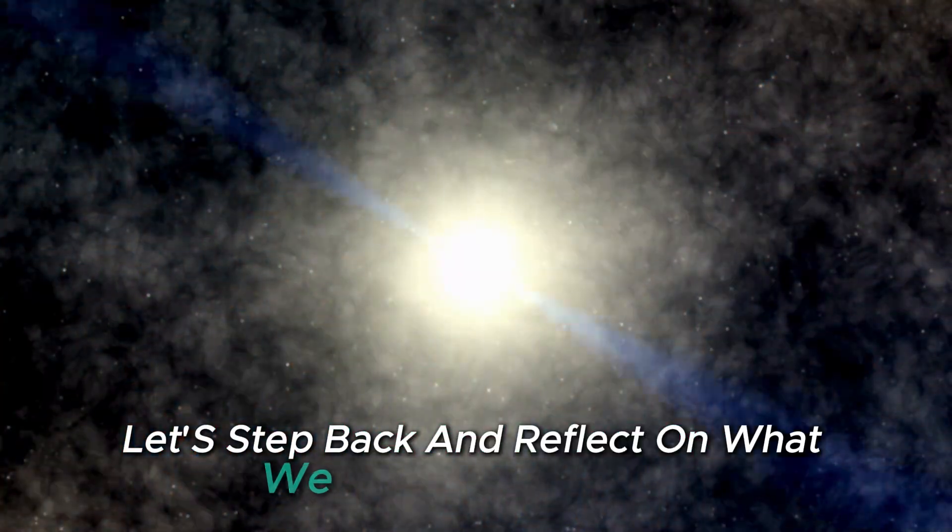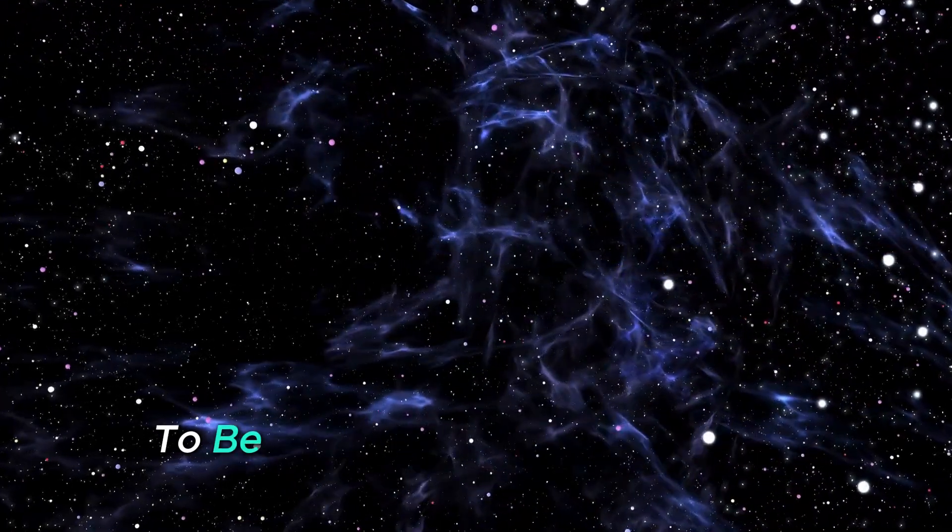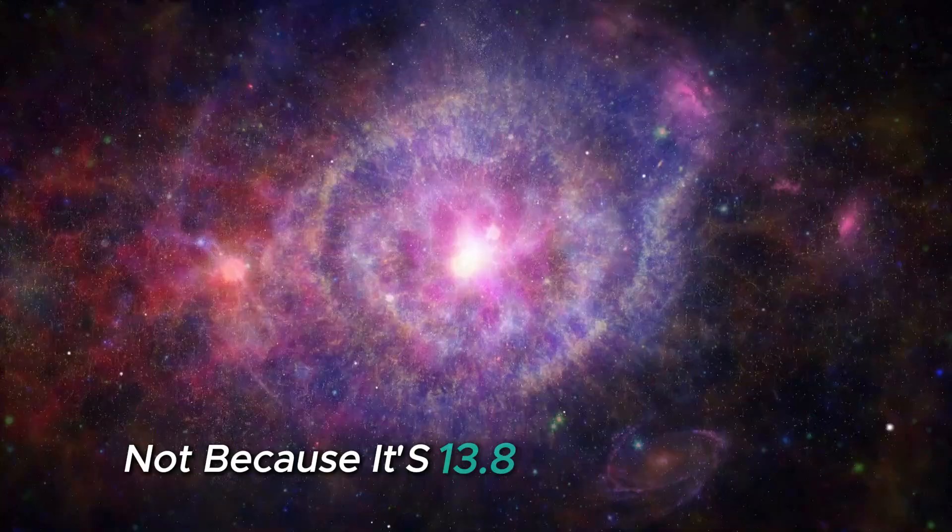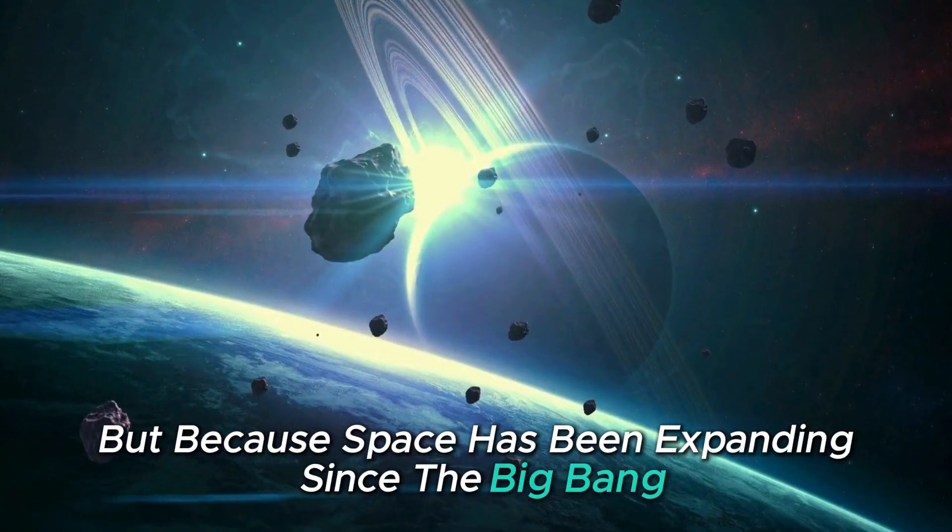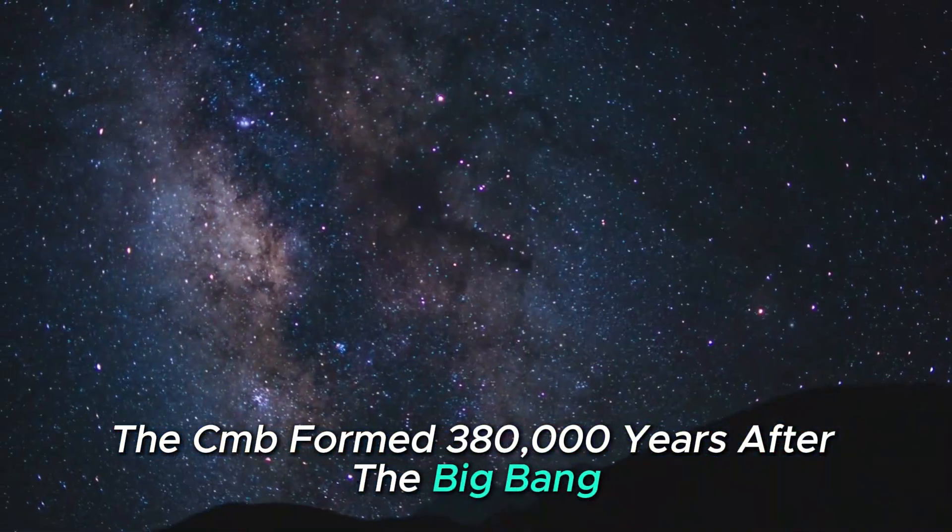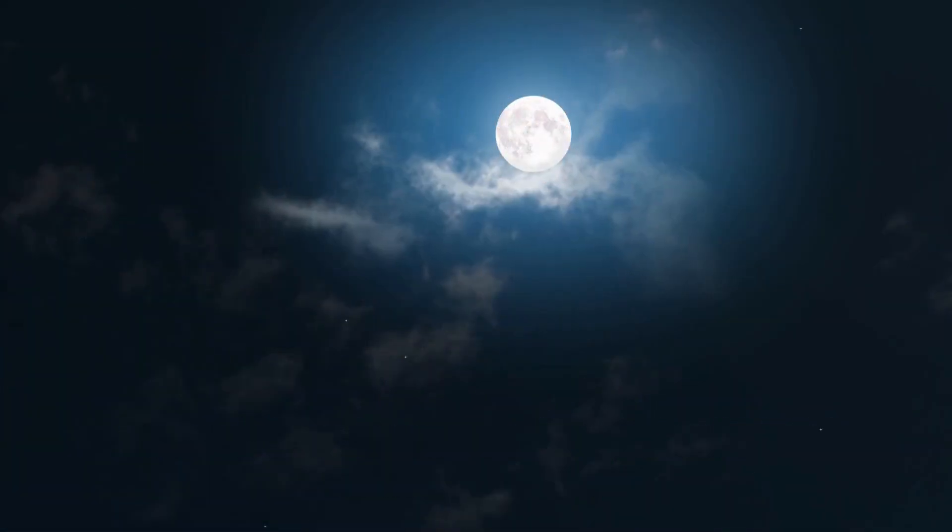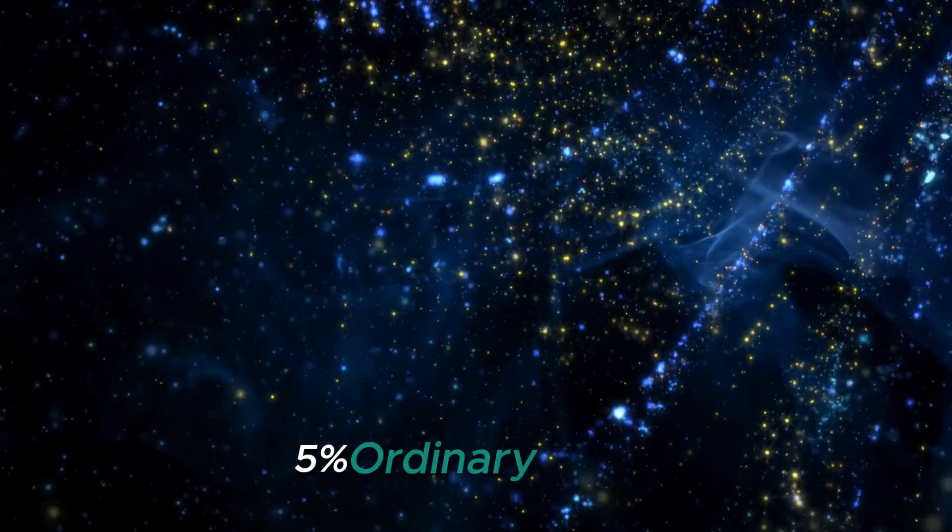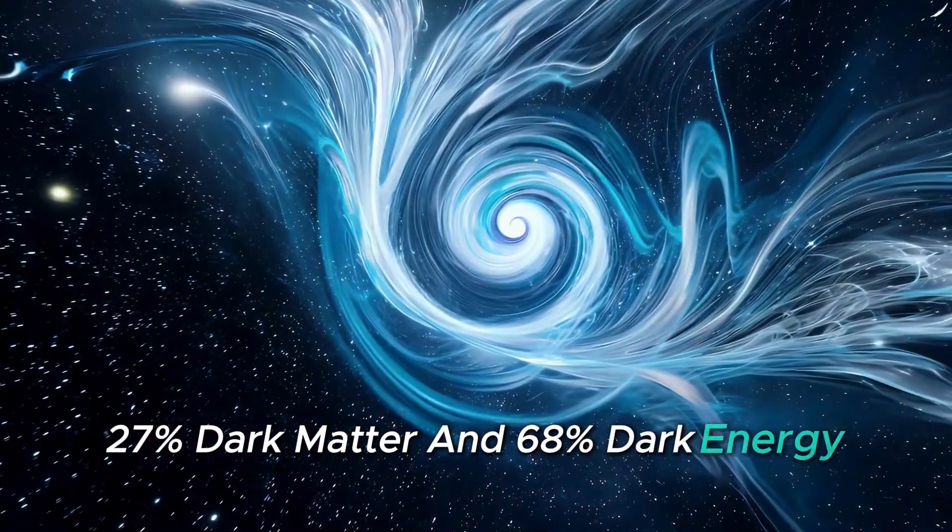Let's step back and reflect on what we thought we knew. For decades we understood the observable universe to be about 94 billion light years across, not because it's 13.8 billion years old in each direction, but because space has been expanding since the Big Bang. The CMB, formed 380,000 years after the Big Bang, marks the moment when the universe cooled enough for atoms to form and light to travel freely. We've known about the Hubble tension and the universe's composition: 5% ordinary matter, 27% dark matter, and 68% dark energy, for years.